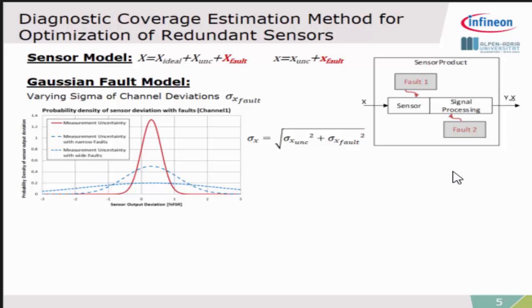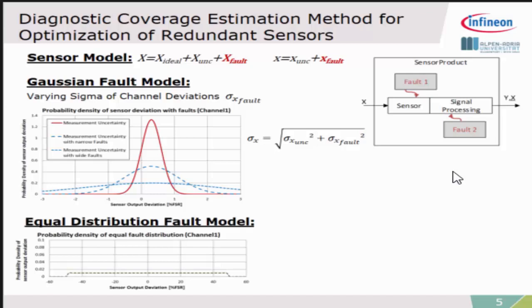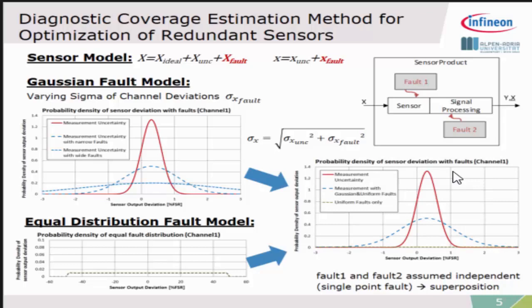The second distribution which can occur is where we don't know exactly how the fault is reacting, so the rest we distribute across our full-scale range of the sensor system. At the end, we superimpose everything together because we are talking about independent faults, so either fault one or fault two can occur.